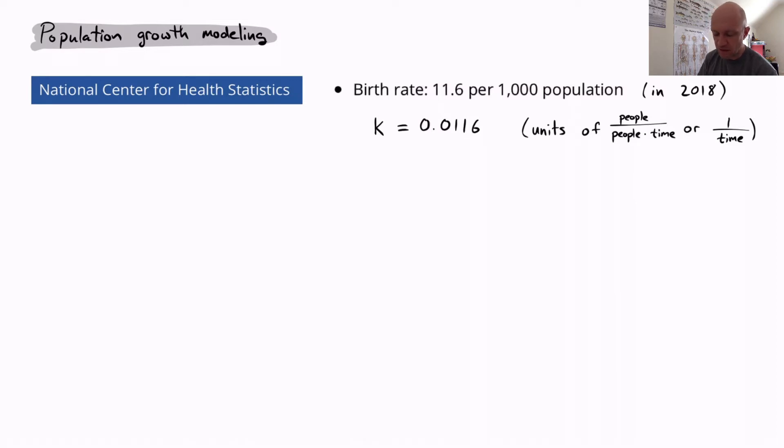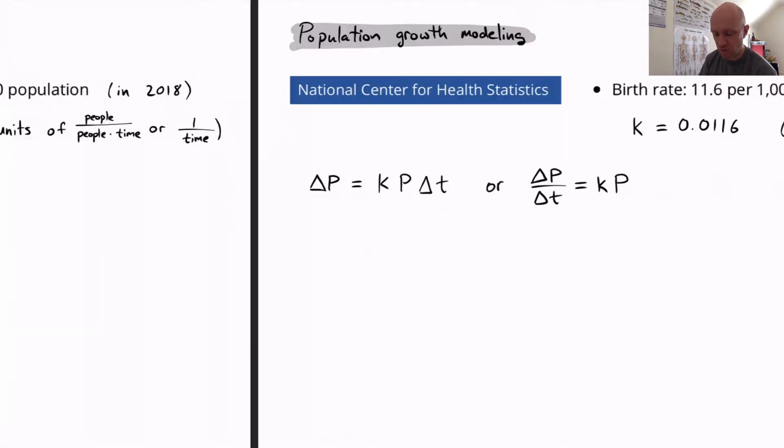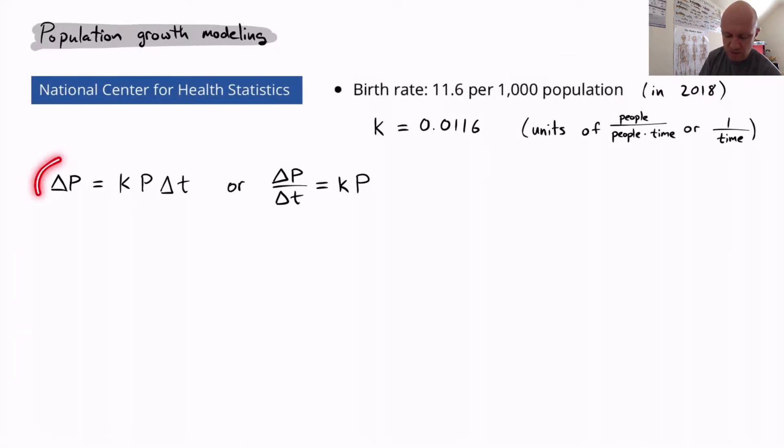Now, if I simplify this to write it instead of 11.6 per 1,000, I just take 11.6 divided by 1,000, I get a number which I'll call k. So the birth rate here is 0.0116, and that's units of one over time.